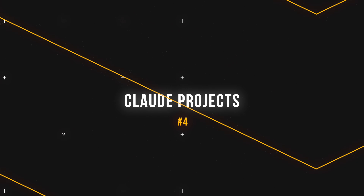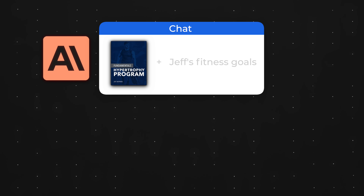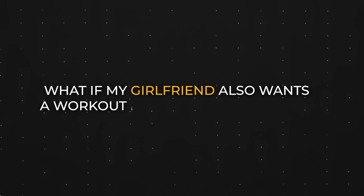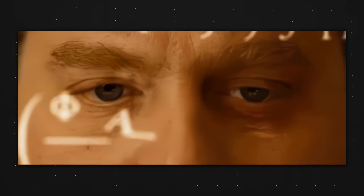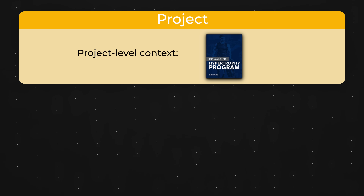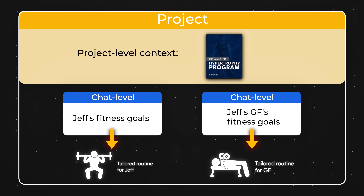Although this next feature isn't exclusive to Claude, it's my favorite one by far. Starting with a simple visualization of how it works: let's say I find a workout program I like online. I can share that as context with Claude along with my fitness goals and ask Claude to generate a tailored plan for me. But what if my girlfriend also wants a workout plan tailored for her? Instead of adding her goals into the same chat thread and risking confusing the AI, it's much better to add the workout routine as project-level context and within that project, create two separate chats with chat-level context. Putting aside the most hypothetical part of this example being me finding a girlfriend.